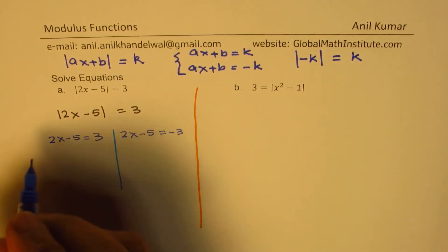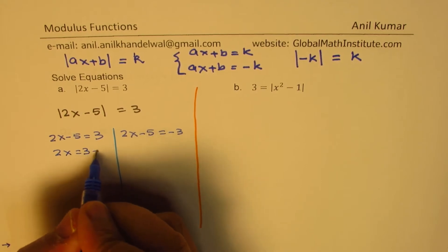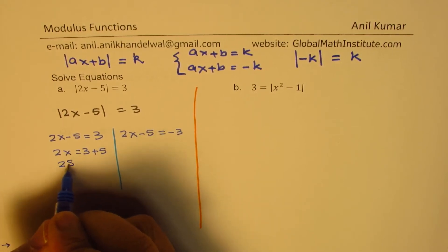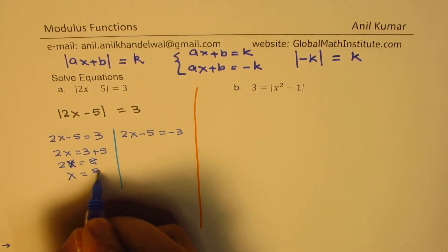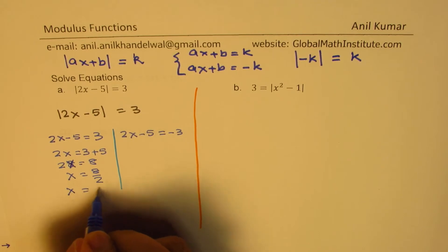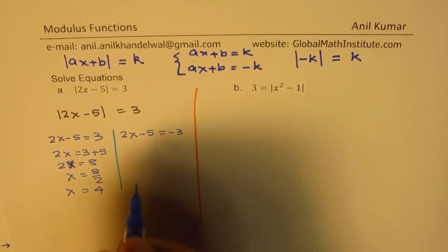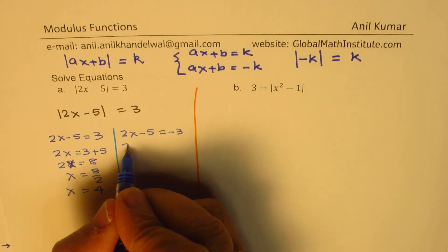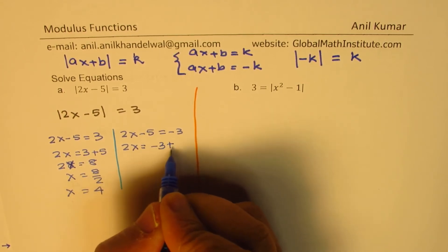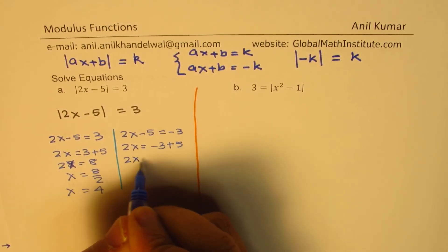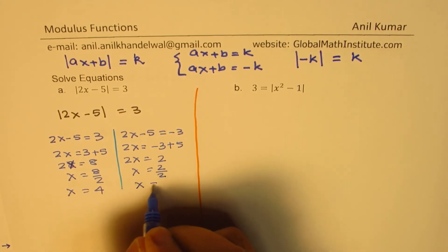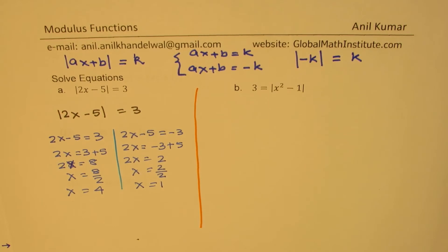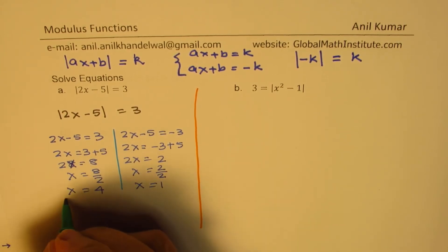Solving 2x minus 5 equals 3: we get 2x equals 8, so x equals 4. Solving 2x minus 5 equals minus 3: we get 2x equals 2, so x equals 1. These are the two solutions. It is a good idea to check our solutions.